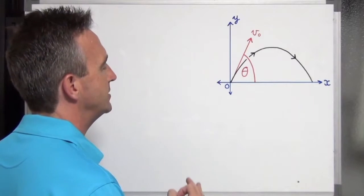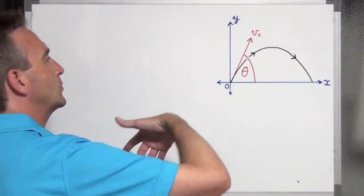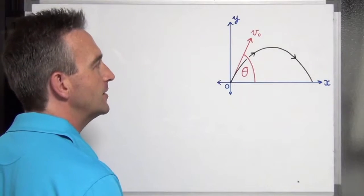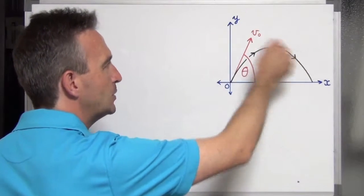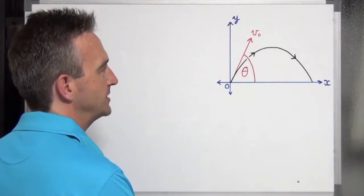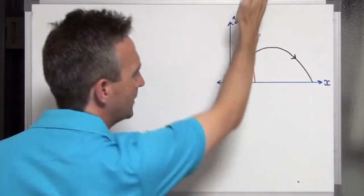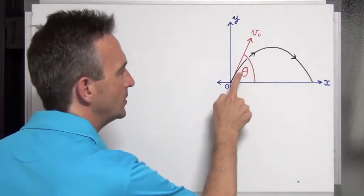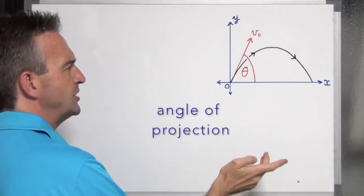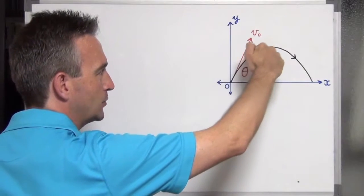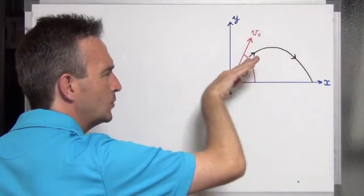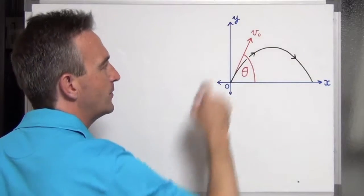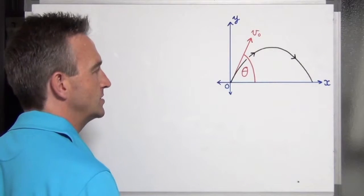To set the scene, a projectile is an object that is flying through the air only under the influence of gravity. The path the projectile follows is traced out by this black line — we call that the line of trajectory. When a projectile is fired it has an initial velocity v0 and a projection angle theta. The projection angle is always constant, though the instantaneous velocity and angle change as it flies through the air.